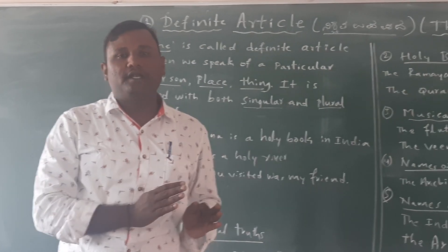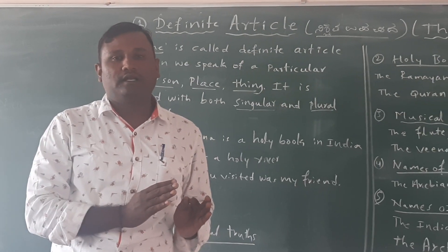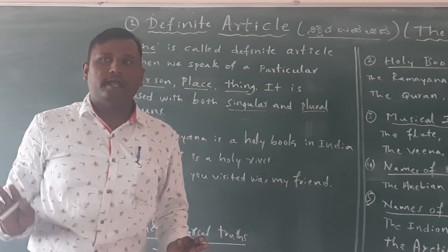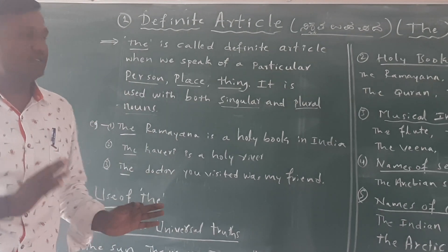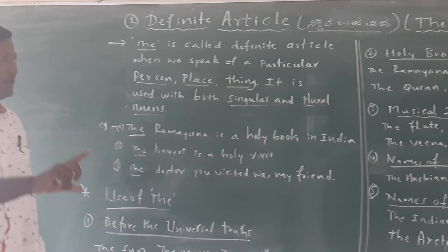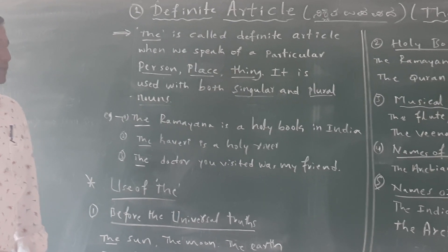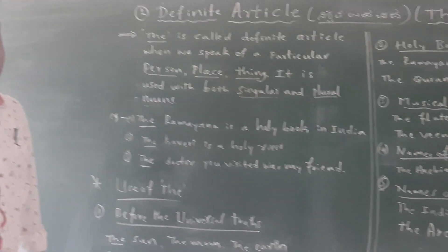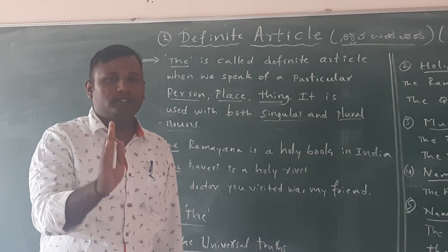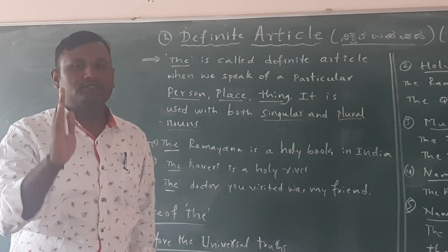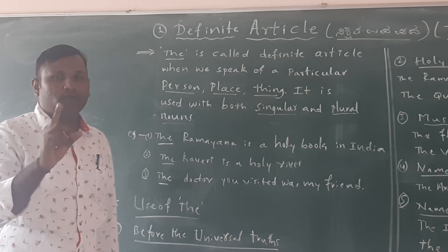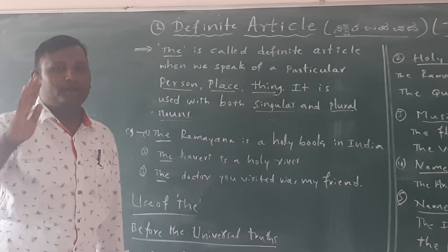It is used with both singular and plural nouns. If we speak of a particular person, place, or thing, that is called definite article.